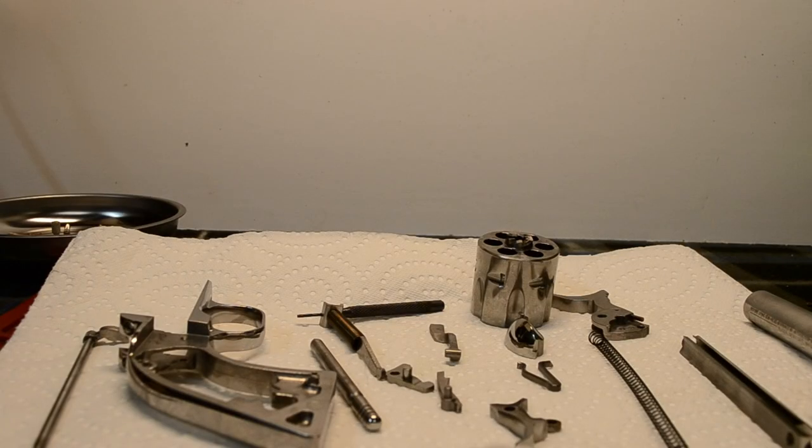Take a paper towel or clean rag and lay it flat on your cleaning surface. Remove all of your major parts and place them on the rag to dry. The tiny parts that are easily lost must be placed into a clean jar or magnetic plate to dry.